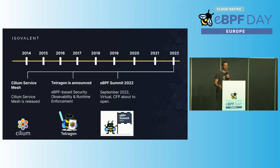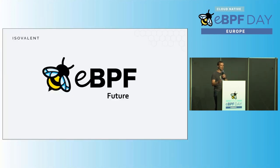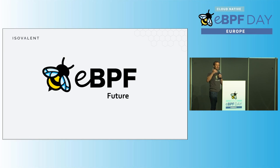The year is not even that old yet, but we already have noteworthy items: Cilium Service Mesh was announced this year, and Tetragon — we're announcing this week. The eBPF Summit 2022 will happen in September, virtually again, with the CFP opening shortly. Looking back, it started in the same year as Kubernetes, and eBPF has gone a very, very long way.